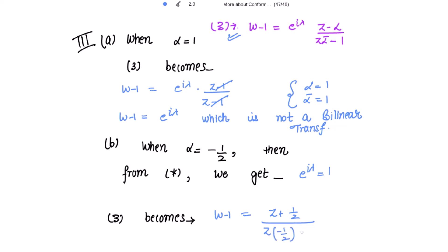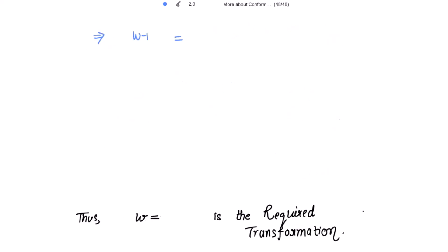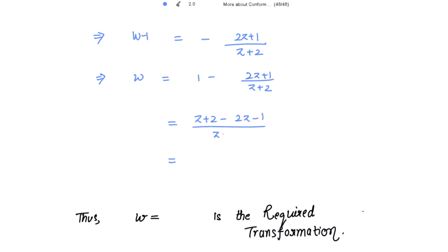Substituting e^(iλ) = 1 and α = -1/2 (so ᾱ = -1/2) into equation 3: w - 1 = (z + 1/2) / (-z/2 - 1) = (2z + 1)/(-2) / (z + 2)/2 = -(2z + 1)/(z + 2). Therefore w = 1 - (2z + 1)/(z + 2) = (z + 2 - 2z - 1)/(z + 2) = (1 - z)/(z + 2). Thus the required transformation is w = (1 - z)/(z + 2).